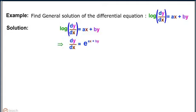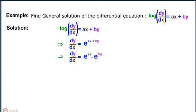Therefore, dy/dx = e^(ax + by). Therefore, dy/dx = e^(ax) · e^(by). Therefore, e^(−by) dy = e^(ax) dx.